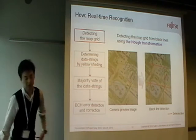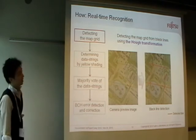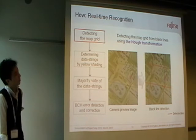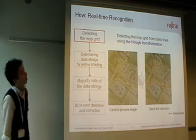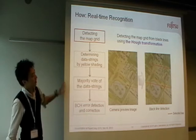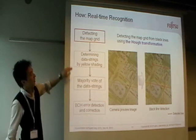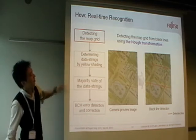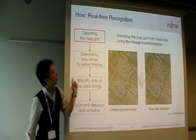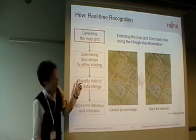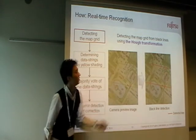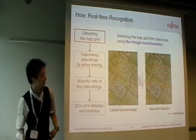The decoder works on mobile phones and recognizes data embedded maps. It has four decoding steps. The first decoding step is detecting the map grid from black lines using a Hough transformation.